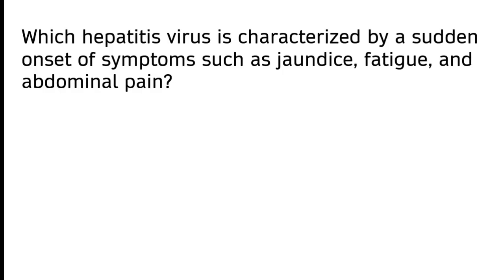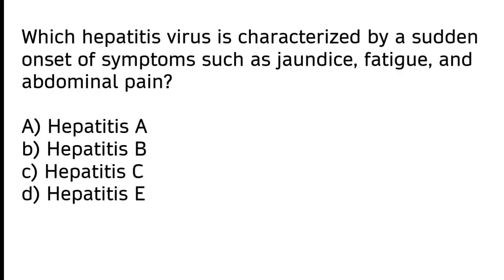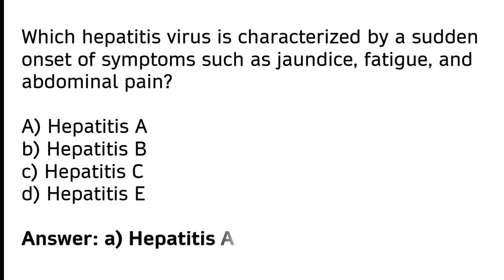Which hepatitis virus is characterized by a sudden onset of symptoms such as jaundice, fatigue, and abdominal pain? A) Hepatitis A, B) Hepatitis B, C) Hepatitis C, D) Hepatitis E. The correct answer is option A — hepatitis A virus is characterized by a sudden onset of symptoms such as jaundice, fatigue, and abdominal pain.